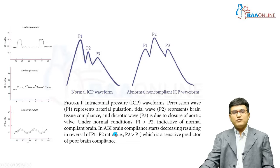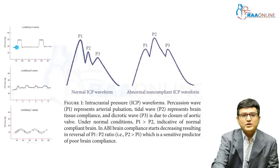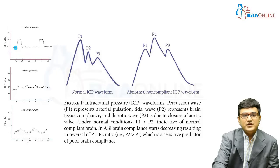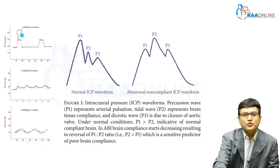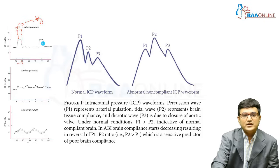Lundberg described three waveforms. As you can see in this diagram, Lundberg's A waves are ICP waveforms with pressure going up to more than 50 mmHg, usually lasting more than 10 minutes. These are definitely pathological and indicate a very poor prognosis, especially in patients with severe traumatic brain injury.